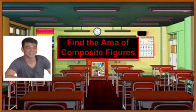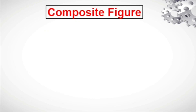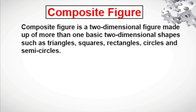Good day everyone and welcome to my class. For today's topic you will learn how to find the area of composite figures. First, let us define what is a composite figure. A composite figure is a two-dimensional figure made up of more than one basic two-dimensional shapes such as triangles, squares, rectangles, circles, and semicircles.